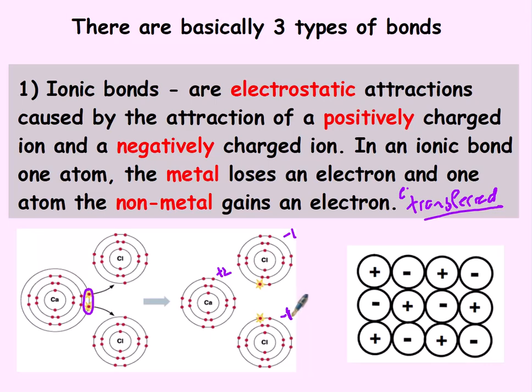So again, ionic bonding is going to be between ions. A lot of times we represent ionic bonds like this picture, where you have a repeating positive, negative, positive, negative arrangement.